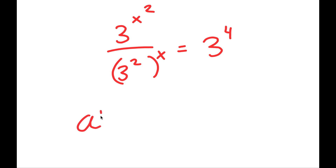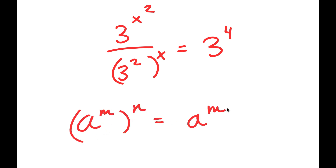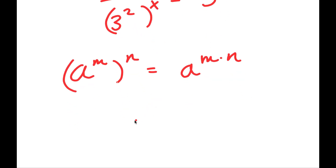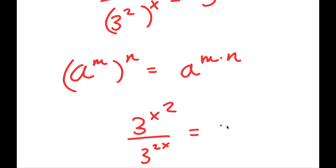Now, if I have something in the form a to the power of m to the power of n, this is equal to a to the power of m times n. So I get 3 to the power of x squared over 3 to the power of 2x is equal to 3 to the power of 4.